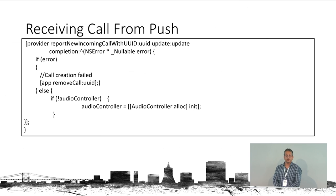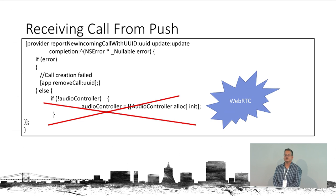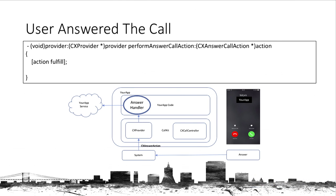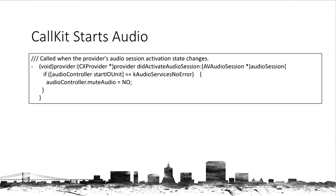We may get an error — for example, if the user sets do not disturb, CallKit returns an error. If everything works well, according to Apple you should allocate an audio controller object, but when using WebRTC don't do that — WebRTC handles its own audio session and doing so creates unexpected results. Contrary to what Apple says, don't mess with audio at all when using CallKit with WebRTC. When the user answers the call, we say the action is fulfilled and notify our server.